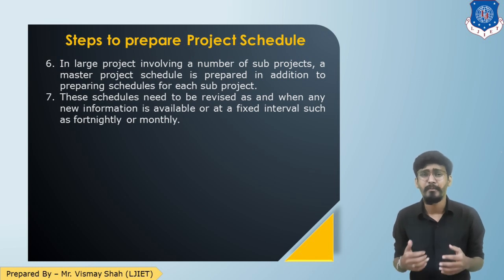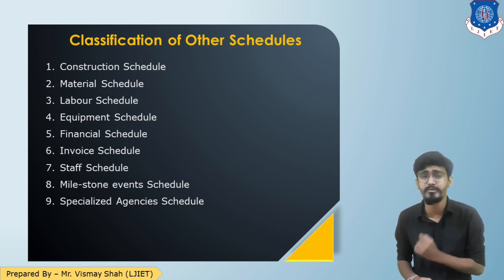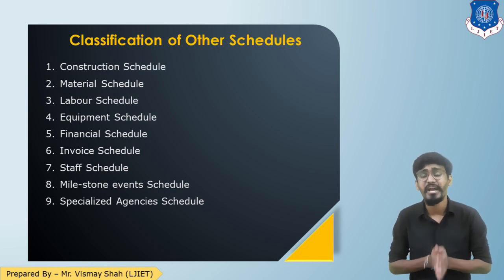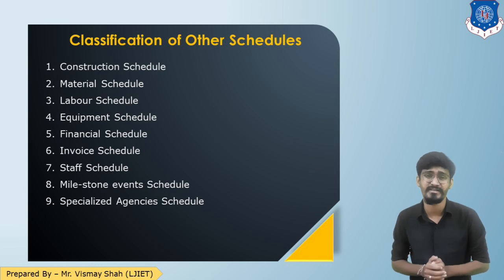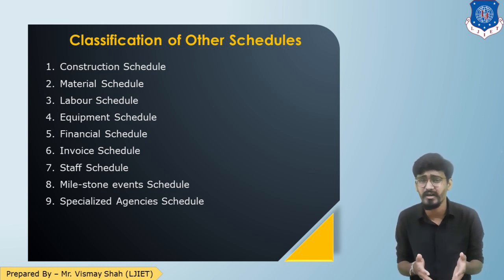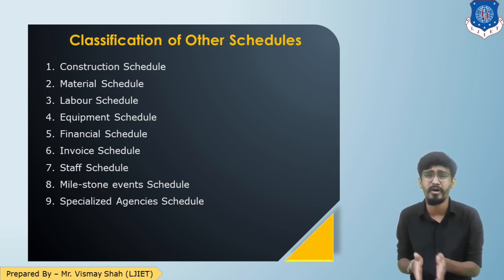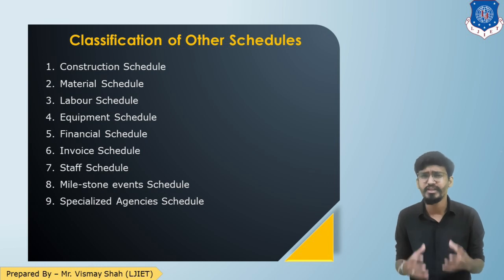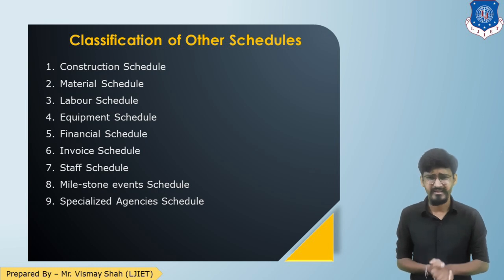There are a number of types of schedules used in a project. The classification includes: construction schedule, material schedule, equipment schedule, labor schedule, finance schedule, invoice schedule, staff schedule, milestone event schedule, and specialized agency schedule — nine schedules in total used in the construction industry. The purpose of each is: the construction schedule provides the roadmap for the entire project; the material schedule tracks material quantity at each stage; and similarly for labor, finance, and the other resources or agencies.